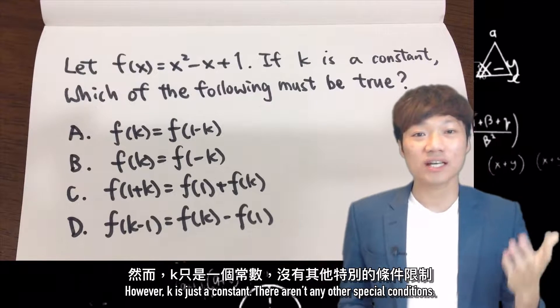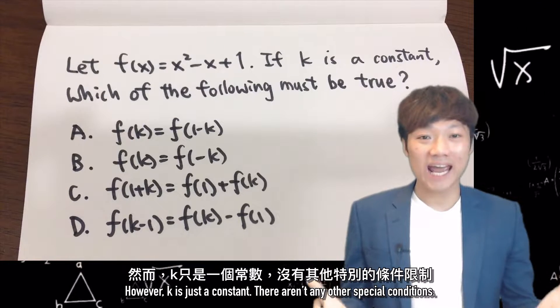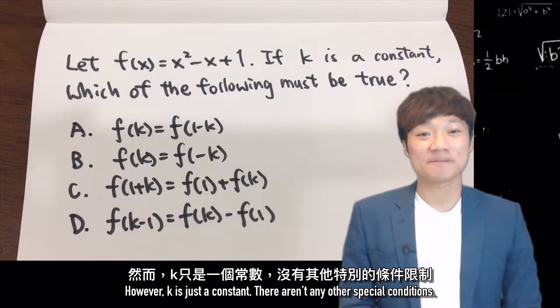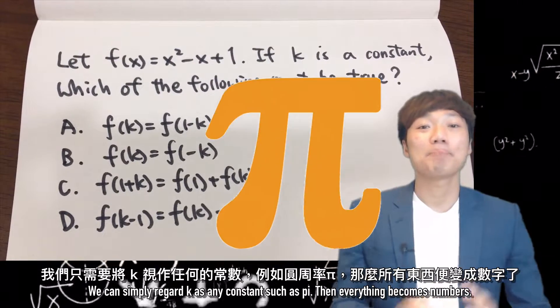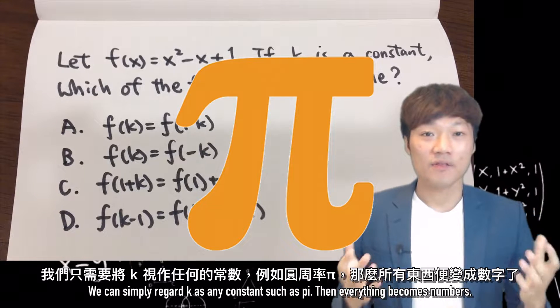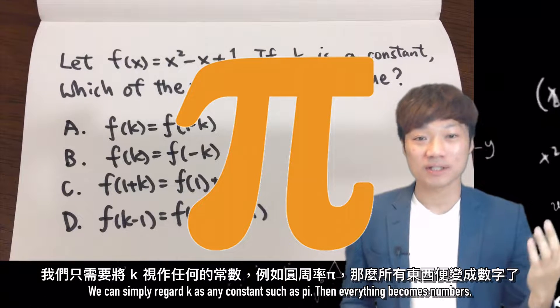However, k is just a constant. There aren't any other special conditions. We can simply regard k as pi. Then, everything becomes numbers.